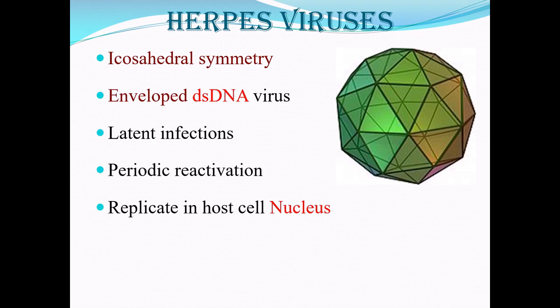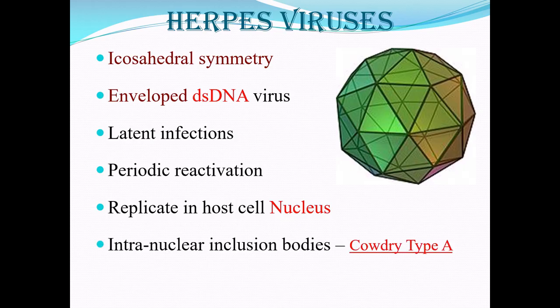This virus replicates in the host cell nucleus. When they multiply, they develop intranuclear inclusion bodies, which are called Cowdry type A inclusion bodies.